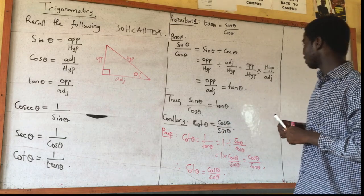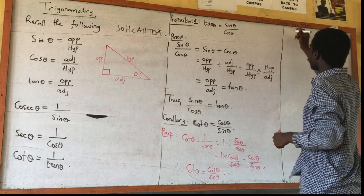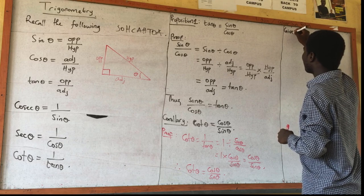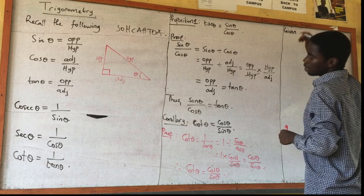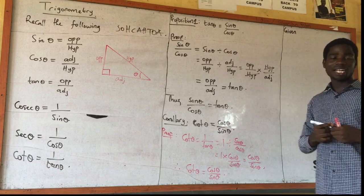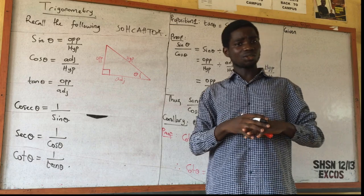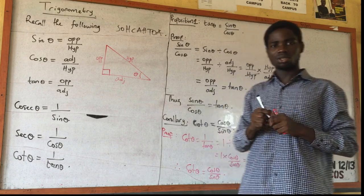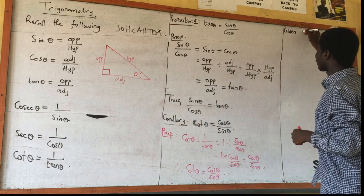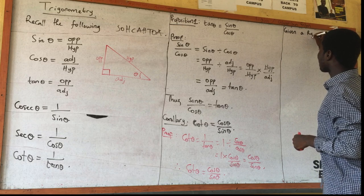All these are the basis of trigonometry. The first things you need to know are sin theta, cos theta, tan theta, and all the reciprocal ratios. You also need to know that tan theta is sin theta over cos theta, and cot theta is cos theta over sin theta. They will be useful whenever we are dealing with proofs.